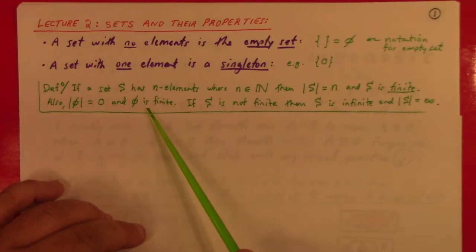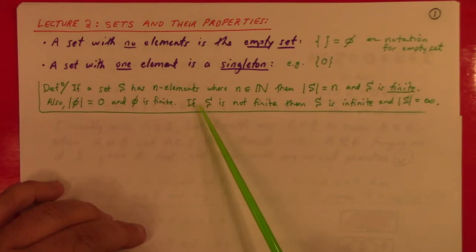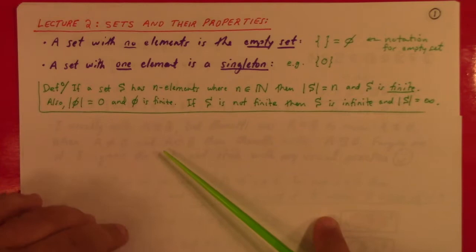Also, the empty set has size zero, or cardinality zero, and the empty set is finite. And if S is not finite, then it's infinite, and we say that the cardinality of S is equal to infinity.